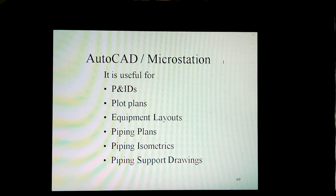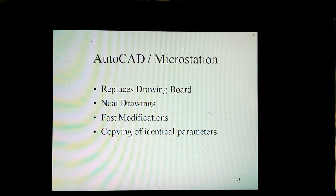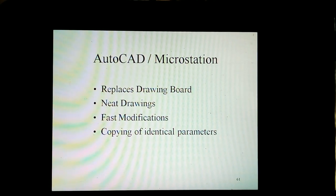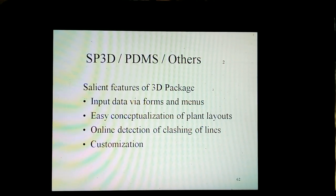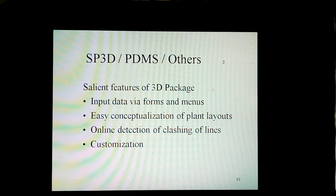Software used for piping includes AutoCAD or MicroStation, which replaces the drawing board for drawing new drawings, fast modifications, and copying of identical parameters, along with good lettering. SP3D or PDMS or other 3D packages allow drawing and data entry via forms, easy conceptualization of plant layouts, online detection and clash checking of lines, and customization.